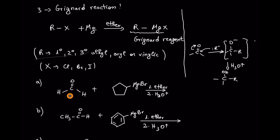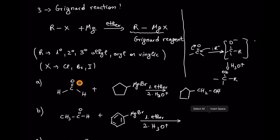If we start from formaldehyde and treat with a Grignard reagent, we are going to form primary alcohols. Be careful — you have the addition of this carbon, so you have more carbons in the final product. In this case the product is cyclopentyl methanol.